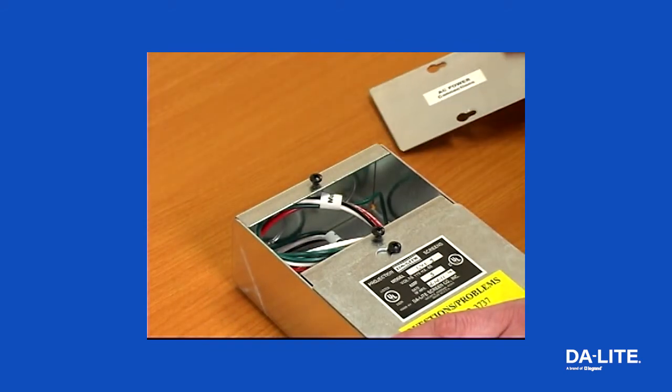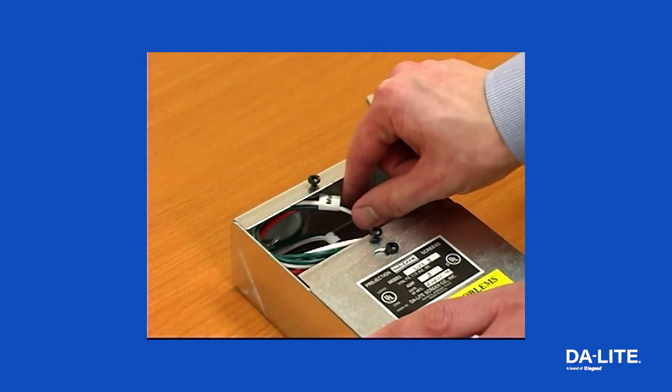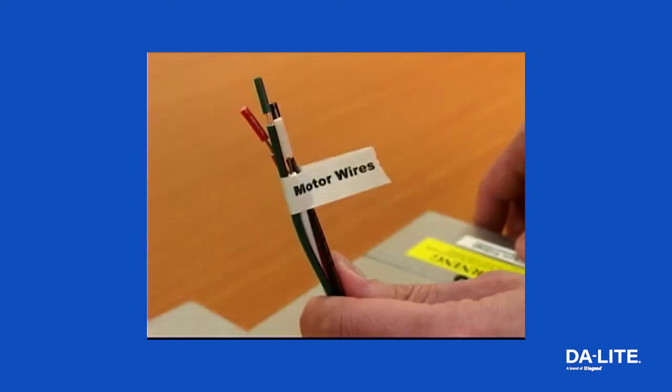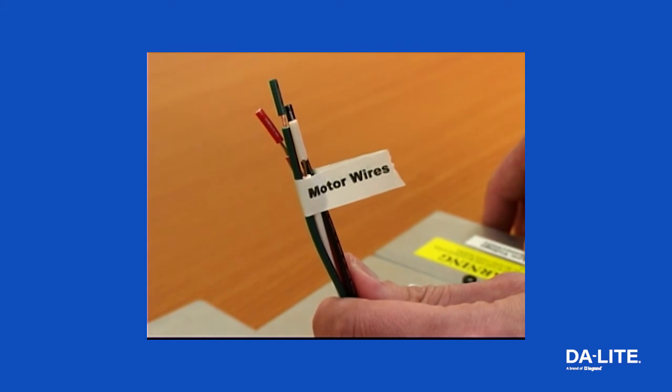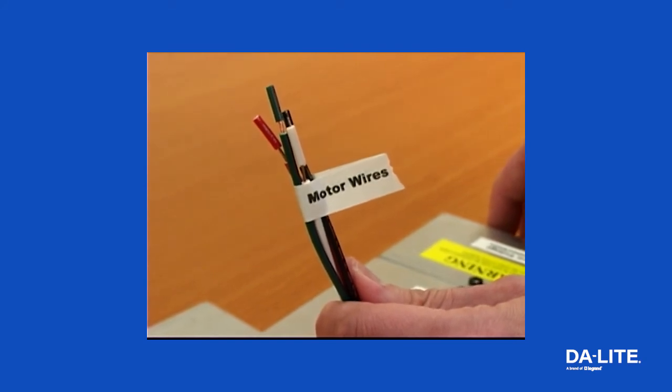Connect the motor wires in the screen junction box to the VPI wires labeled motor wires. Use 14 to 18 gauge wire to extend the motor wire to the required length.